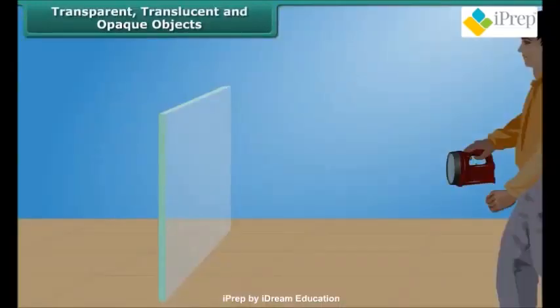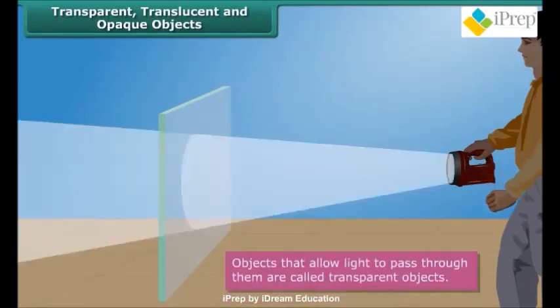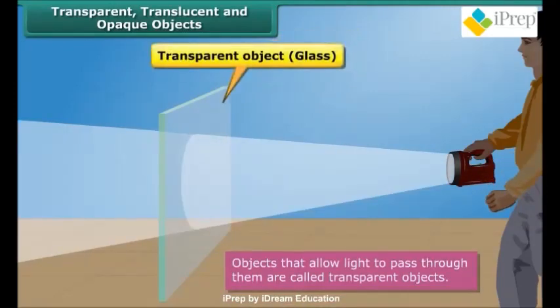Light objects are classified as transparent, translucent, or opaque depending upon their treatment of light. Objects that allow light to pass through them are called transparent objects. Most of the light falling upon a transparent object passes through it to the other side, thereby allowing us to see through them.